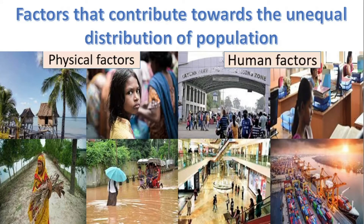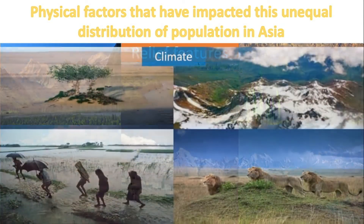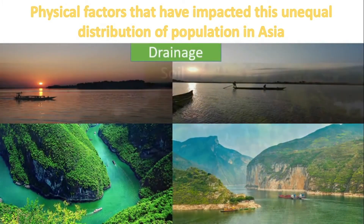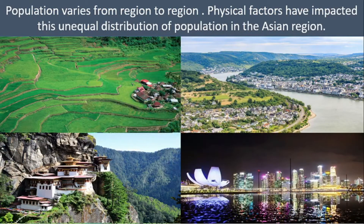In this presentation on population distribution in Asia, we are not going to pay attention to human factors — we will only be looking at physical factors. The physical factors that have impacted the unequal distribution of population in Asia are: relief features, climate, drainage, and soil. In addition to these, distribution of natural resources and natural vegetation are also factors that affect population distribution. So population varies from region to region, and physical factors have mainly impacted this unequal distribution of population in the Asian region.